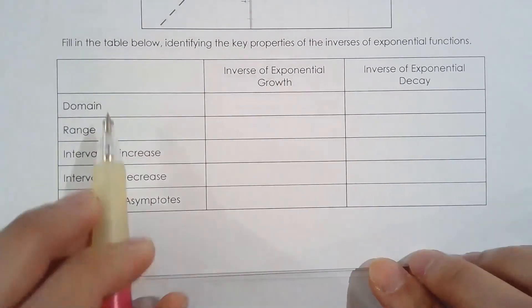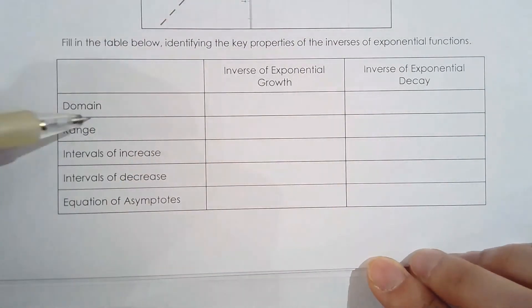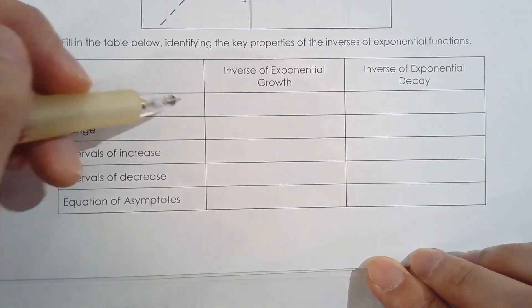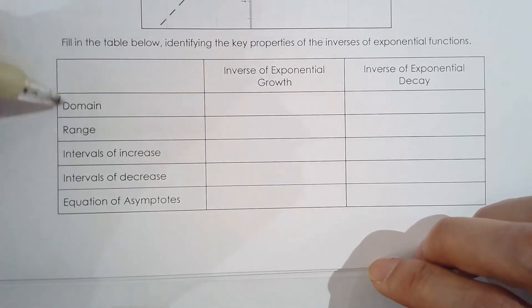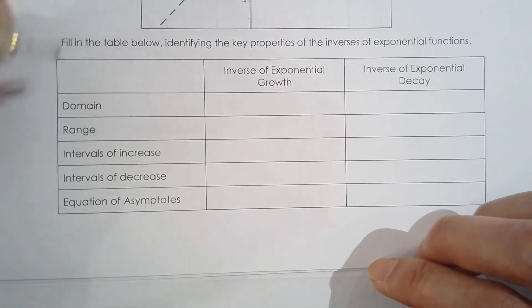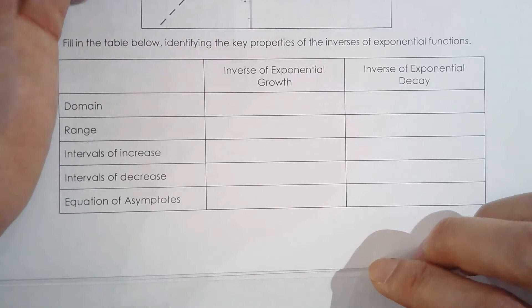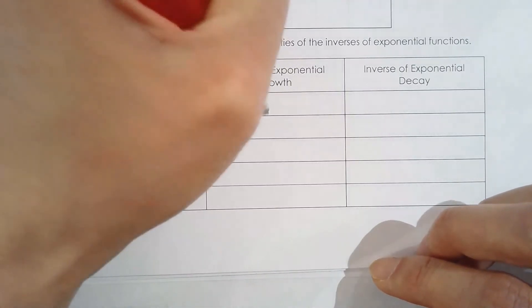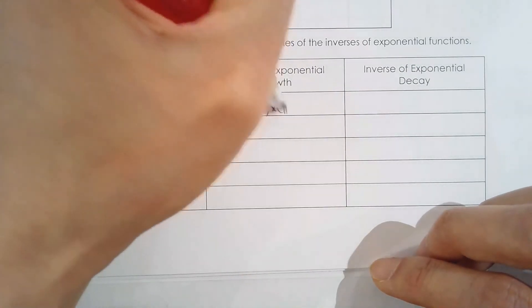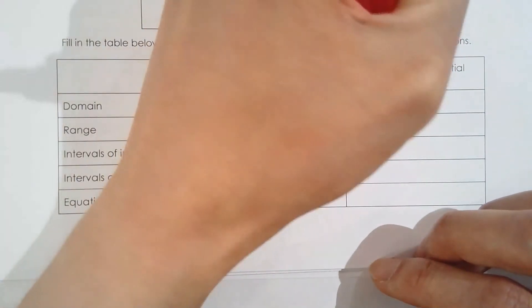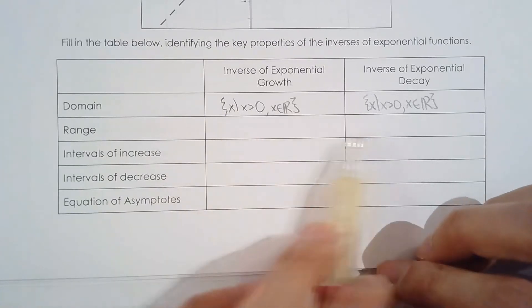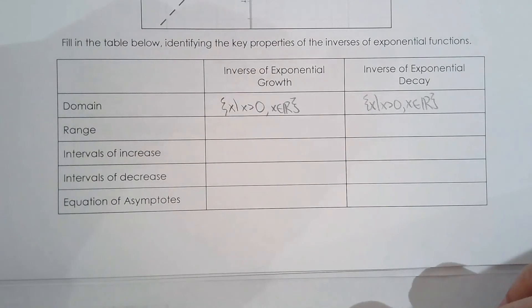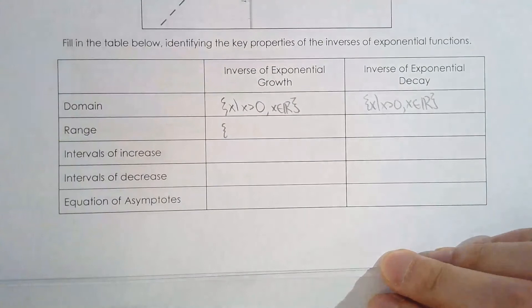Let's go over the properties of a logarithmic function. You don't even need to memorize this independently — just think back to the exponential function. The domain of a logarithmic function equals the range of the exponential function, which is y > 0, so the domain is x > 0. The range of the logarithmic function equals the domain of the exponential function, which is all real numbers.